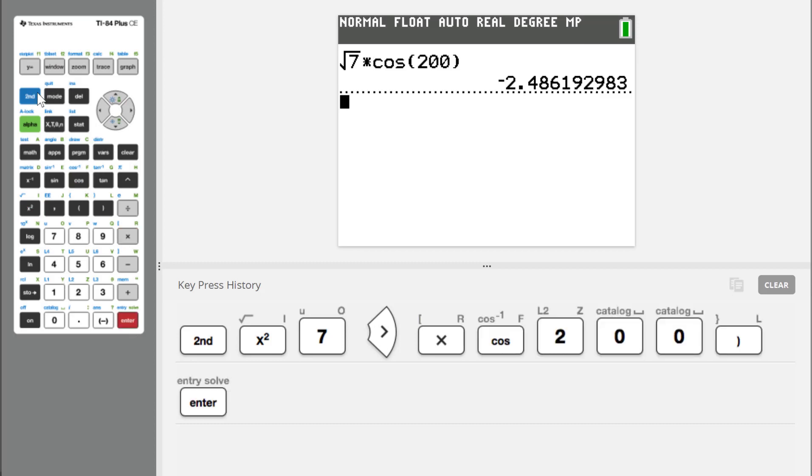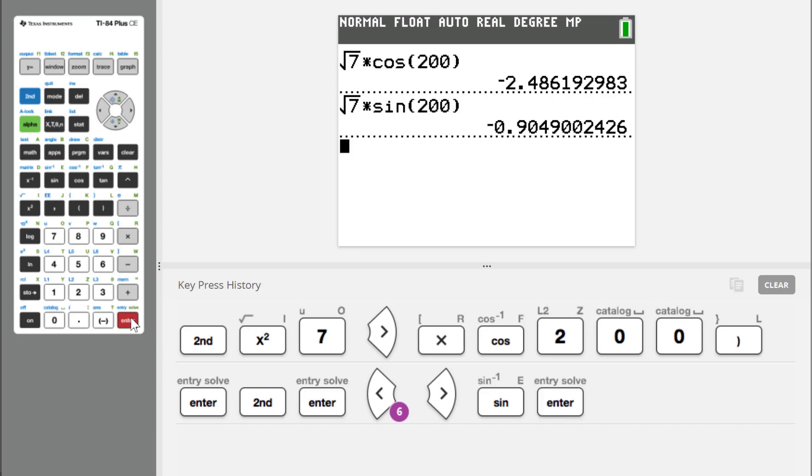And then I need to do the same thing with sine. How about I take the last entry and just change that cosine to a sine. And then I can hit enter there, and there's my other value.